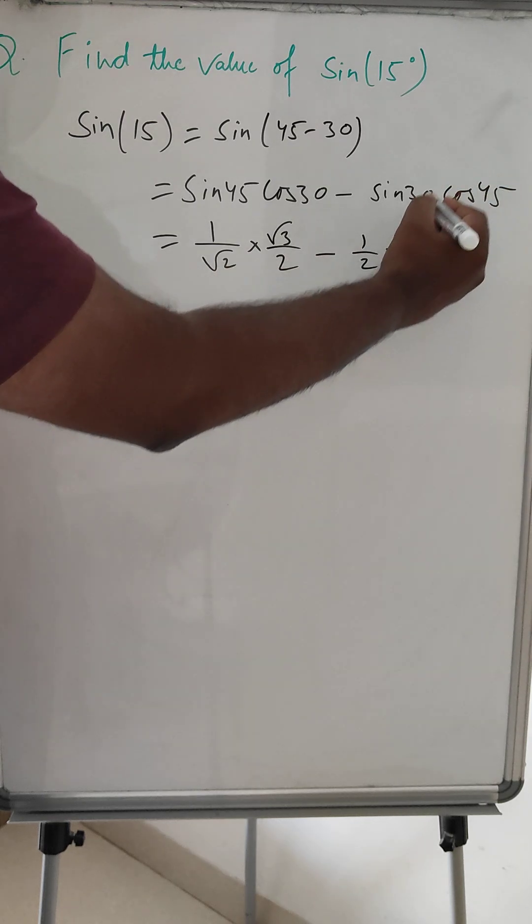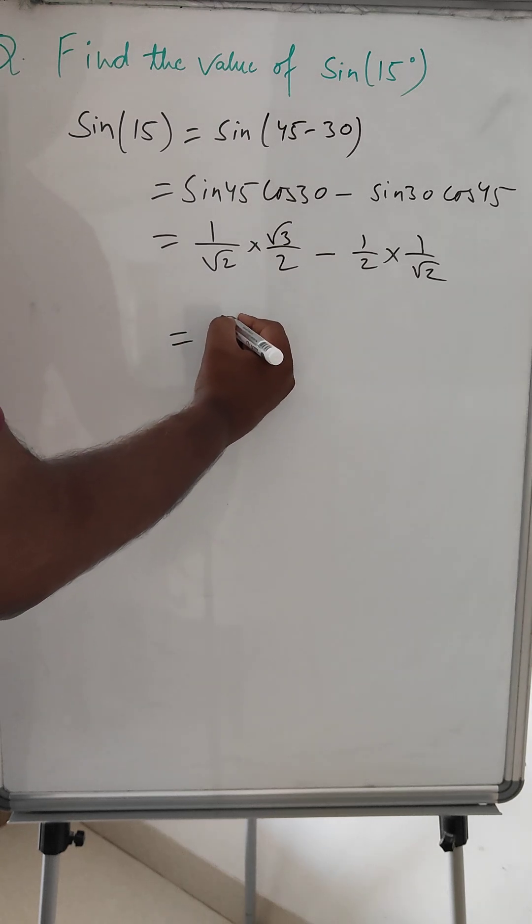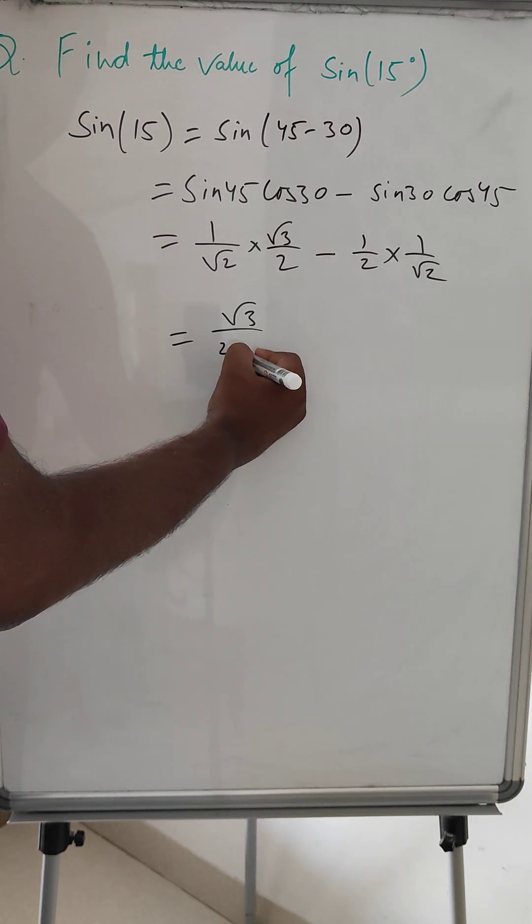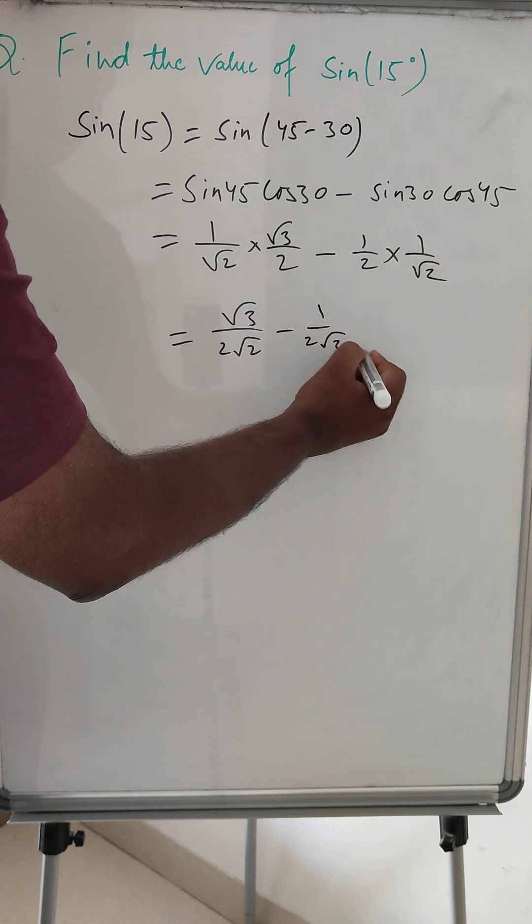And cos 45 is 1 over root 2. So it is root 3 over 2 root 2 minus 1 over 2 root 2.